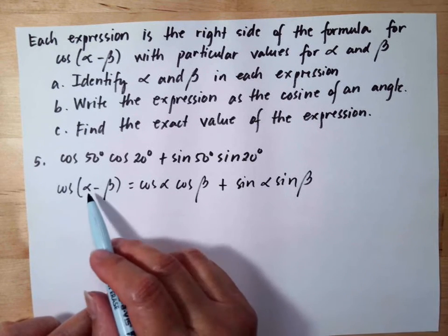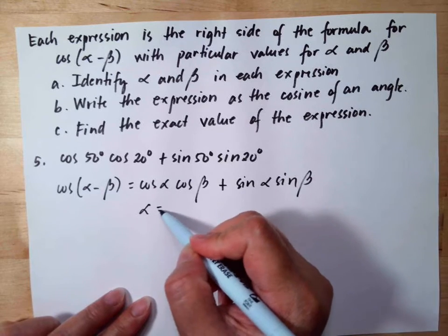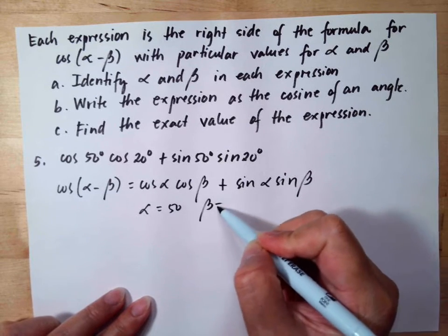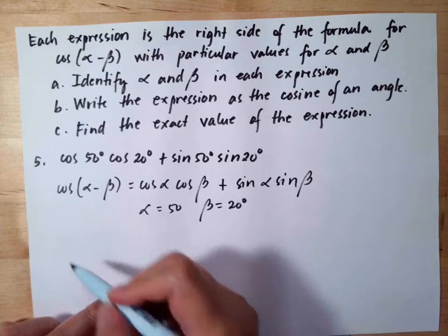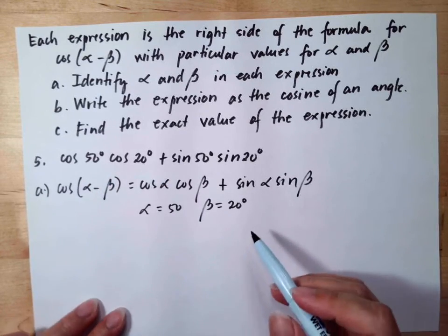Here our alpha is 50 degrees and our beta is 20 degrees. So this is the answer for letter A.